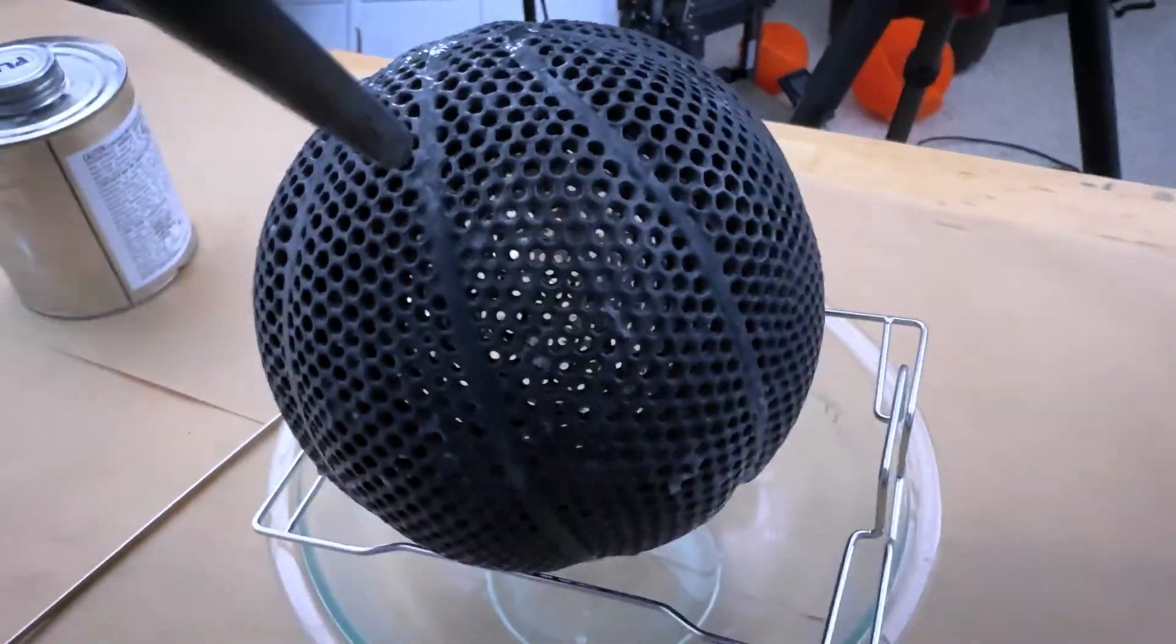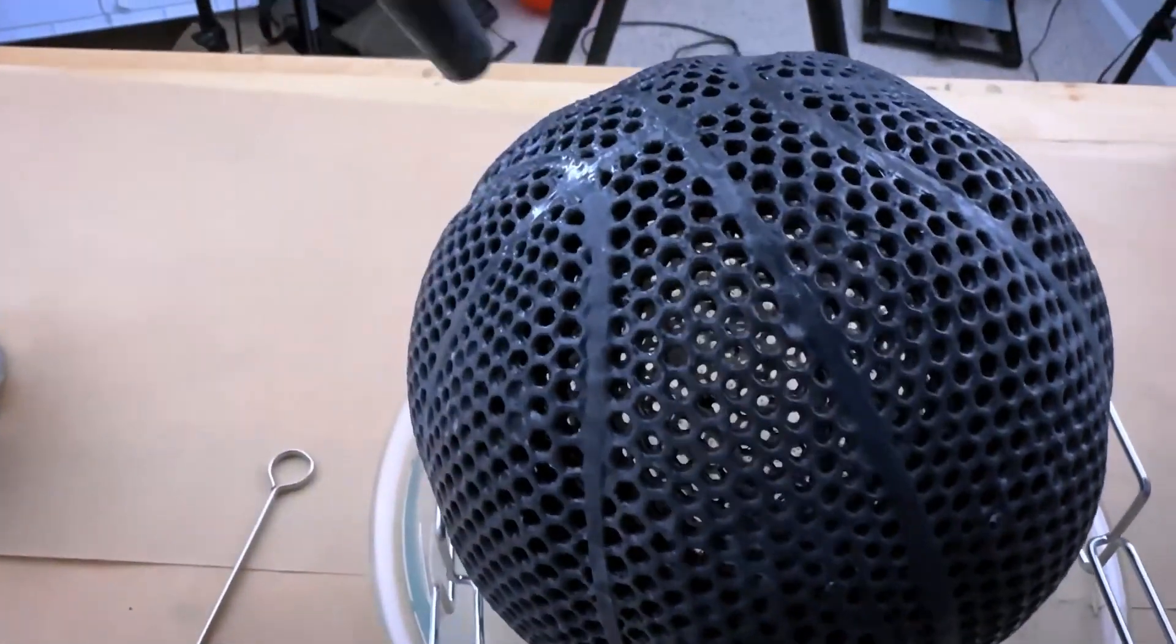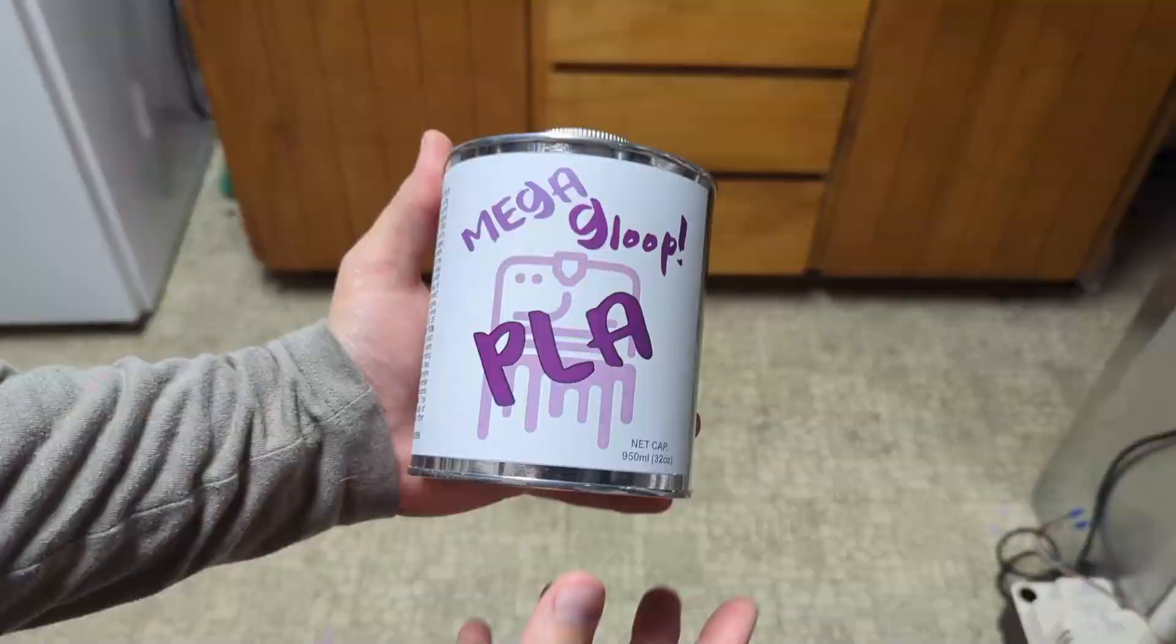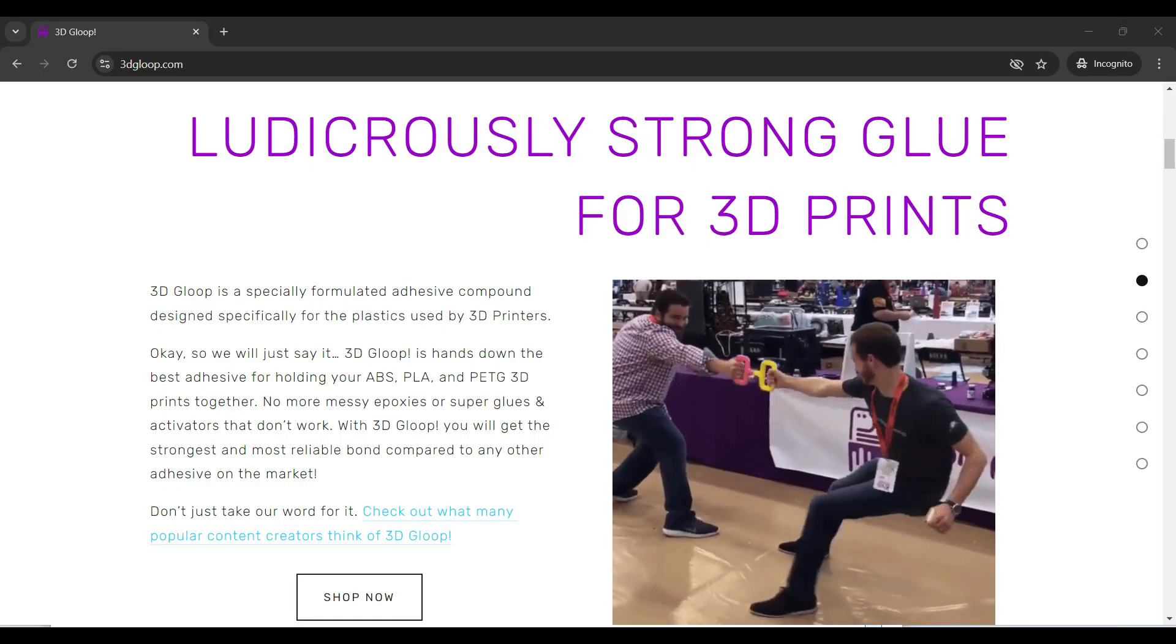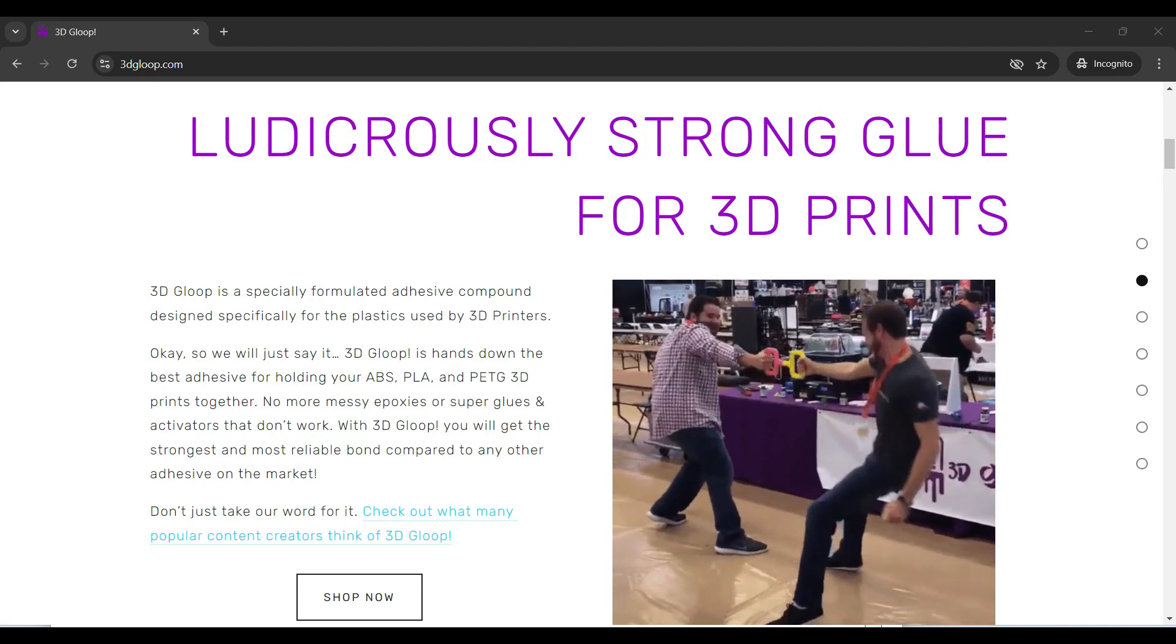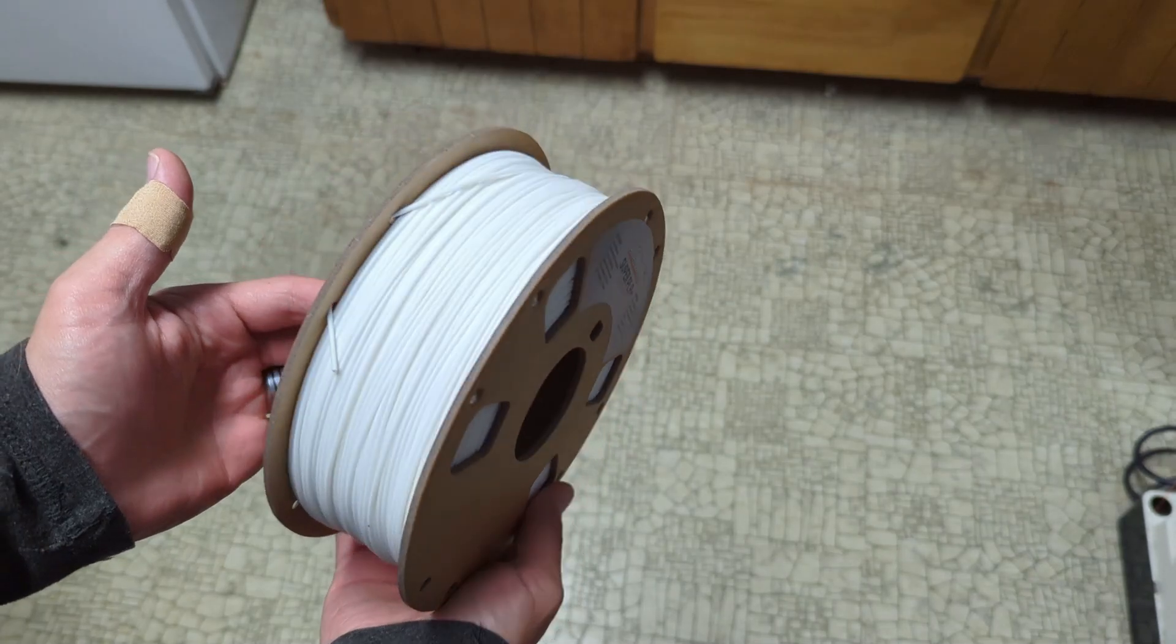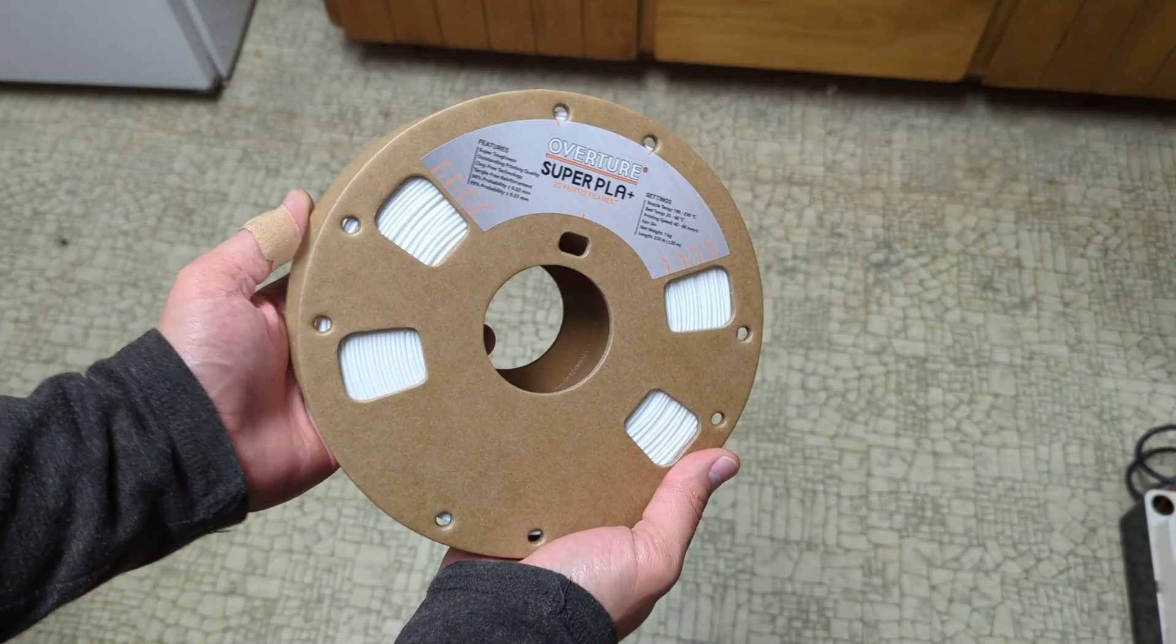But the basketball he printed was fairly small, and I never saw a full-size version of that, so I decided that's what I was going to do in this video. For those of you who don't know what 3D Gloop is, it's an adhesive compound that's designed to fuse and hold 3D printed pieces together. But we're going to use it on this Super PLA Plus filament by Overture to see what kind of basketball we can make with it.